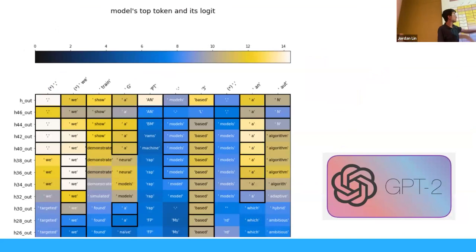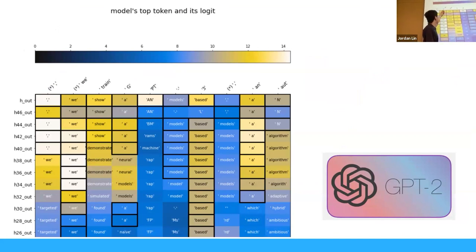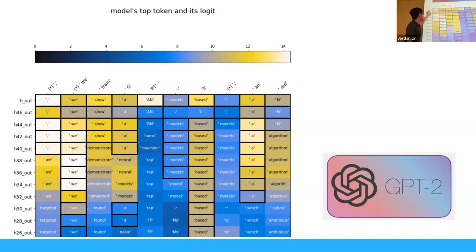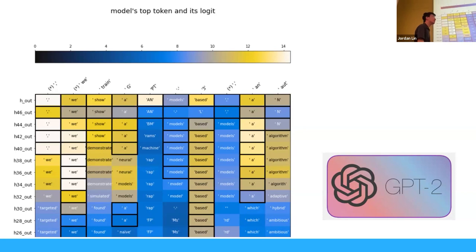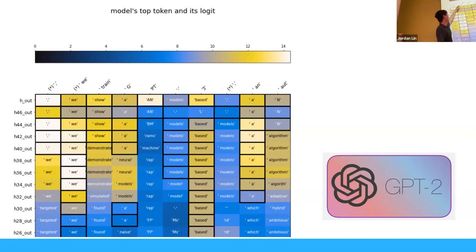Let's say we input a sequence like 'we train GPT' — the model's output after seeing 'we' thinks 'show' will come next (wrong), and after seeing 'we train' it thinks 'A' will come next (reasonable but wrong). But interestingly, the intermediate layers produce coherent outputs too — even layer 40, which is eight layers before the final output, still thinks the next token is something like 'demonstrated.' We can get coherent output from unembedding intermediate residual streams, using the same unembedding matrix throughout.